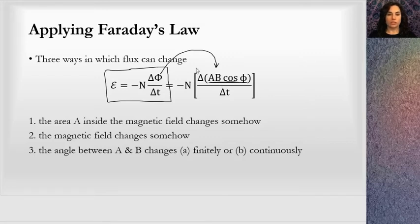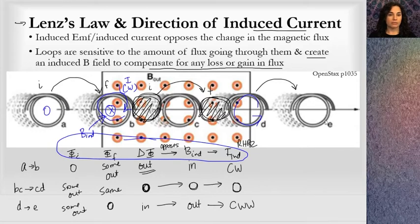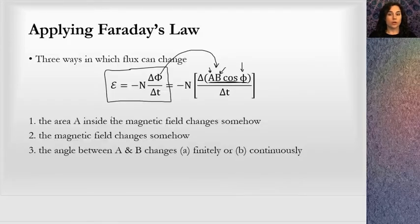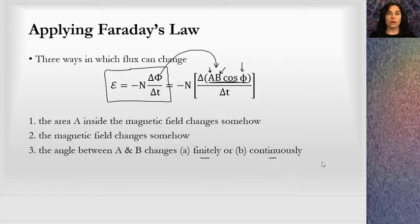There are three ways flux can change because there are three variables in the equation phi equals AB cosine phi: the area variable, the magnetic field variable, and the angle of orientation between the two vectors. The area inside the magnetic field can change — as we saw in the previous problem. Or the magnetic field itself can change. Or this angle can change, either by a finite rotation or continuously. Each way has a specific equation that goes with it.